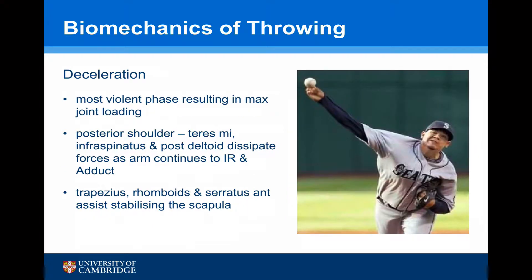The deceleration phase is the most violent phase, which results in maximum joint loading. The posterior shoulder, including teres minor, infraspinatus, and the posterior deltoid, dissipate this force as the arm continues to internally rotate and adduct. The trapezius, rhomboids, and serratus anterior assist in stabilising the scapula.